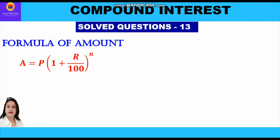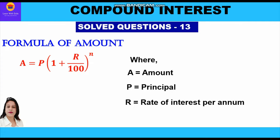The formula of amount that we use is A is equal to P in bracket 1 plus r upon 100, whole raised to power n, where A is the amount, P is the principal, r is the rate of interest per annum, and n is the number of years.